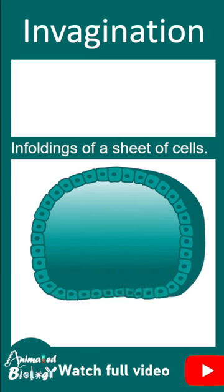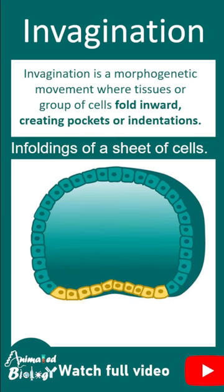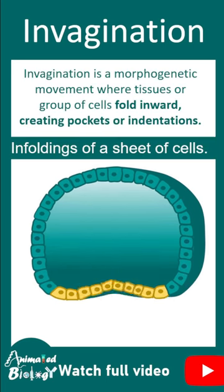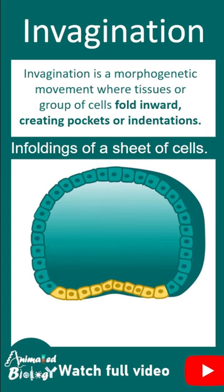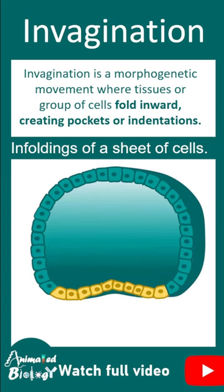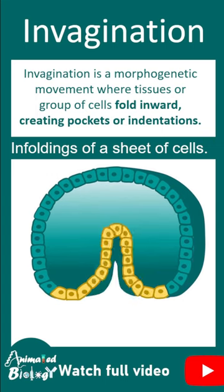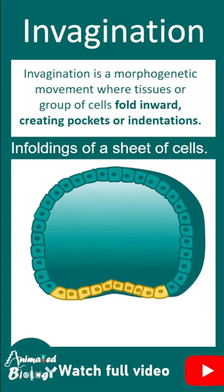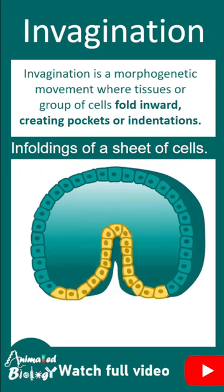Invagination is one type of morphogenetic movement which involves a group of cells or tissue folding inwards. This inward folding of a sheet of cells is simply known as invagination.